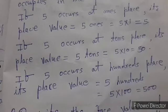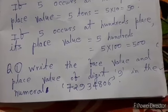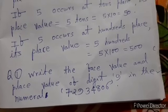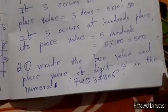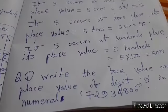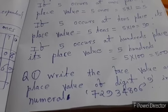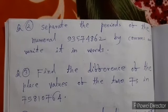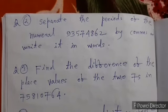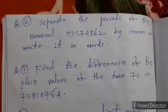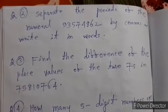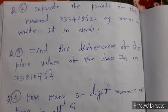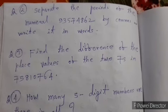Now we give some questions to do at home. The questions are as follows. Question 1: Write the face value and place value of digit 9 in the numeral 72934806. Question 2: Separate the periods of the numeral 93574862 by commas and write it in words. Question 3: Find the place value of the two 7's in the numeral 735810764.